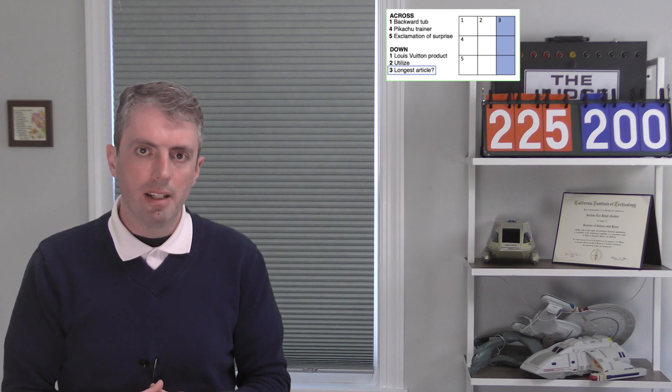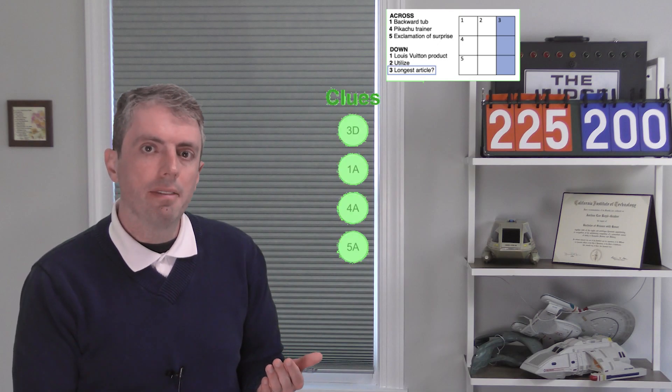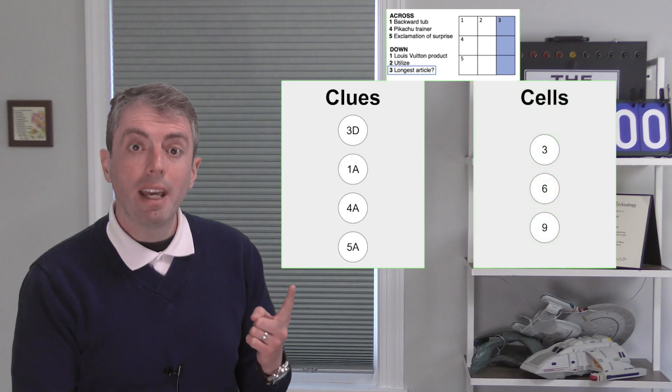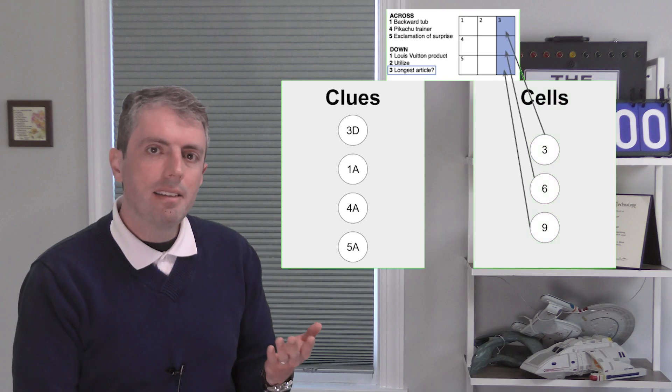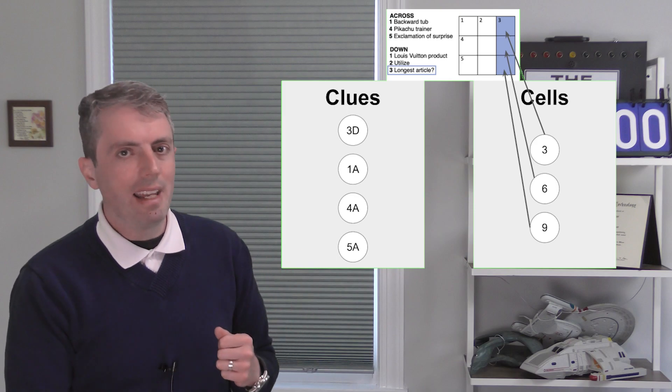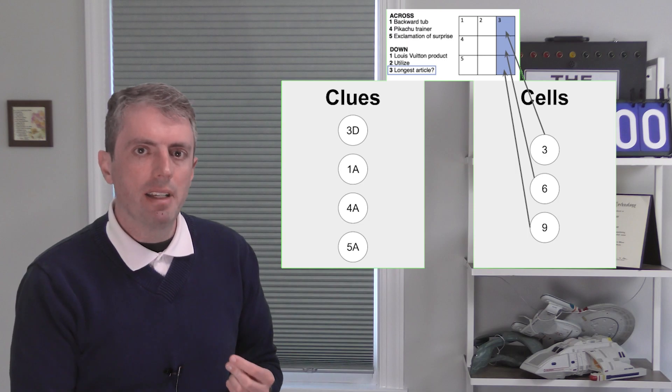But getting back to the main story, the lasting contribution of Proverb was creating a bipartite graph that expressed the links between the clues and the cells in a crossword grid. So the bipartite graph has two sides, clues on the left and cells on the right. Here I only have the clues that interact with the blue shaded cells. Let's number them 3, 6, and 9.